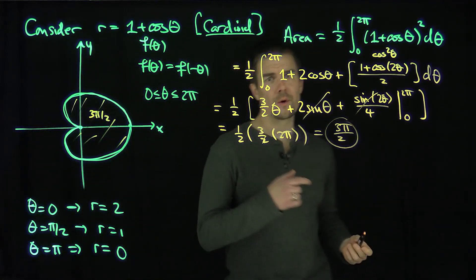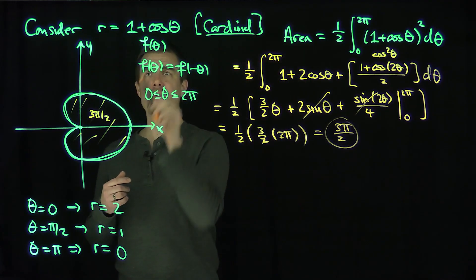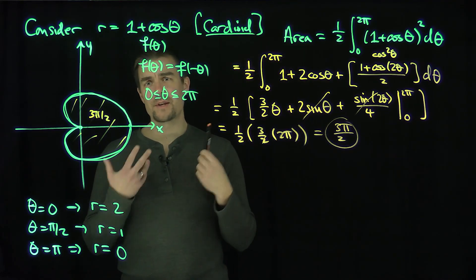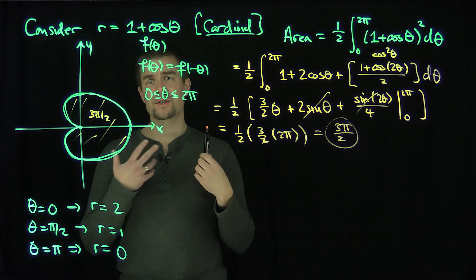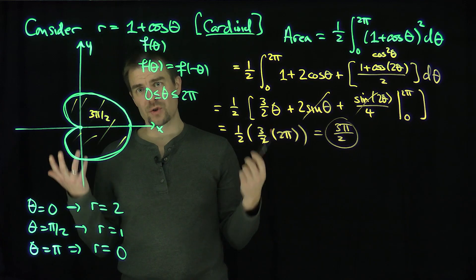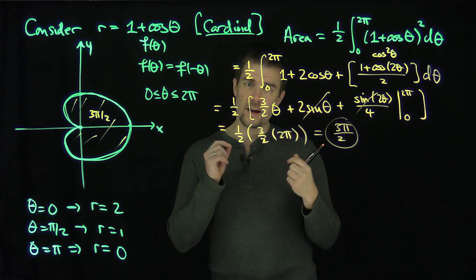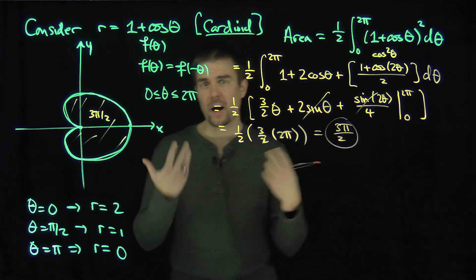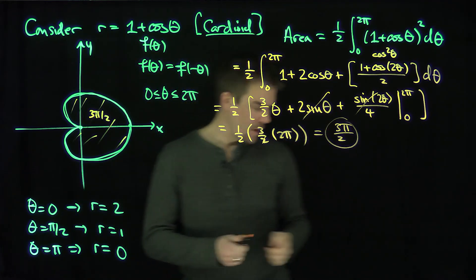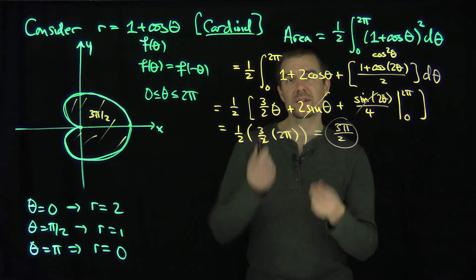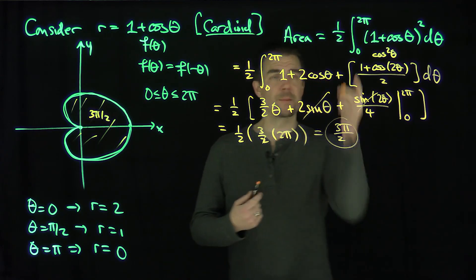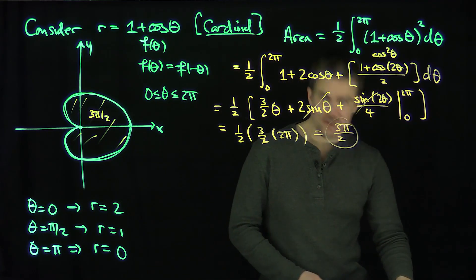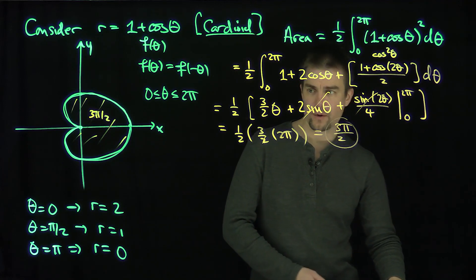For other cardioids, if you put a scale factor of a in front of r, the area just scales by a squared — the calculation is the same and you pull the constant out. Now, if I want to find the arc length of this cardioid, I use the arc length formula for polar curves.